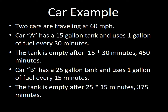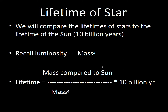Consider two cars: Car A holds 15 gallons and uses one gallon every 30 minutes, so the tank empties after 450 minutes. Car B has a 25-gallon tank but uses one gallon every 15 minutes, so it empties after only 375 minutes — faster, despite having more fuel. Stars work the same way. The stellar lifetime formula is: (M/M☉) divided by (M/M☉)⁴ — where the fourth-power term represents luminosity, the rate of fuel consumption — multiplied by 10 billion years, the Sun's lifetime.